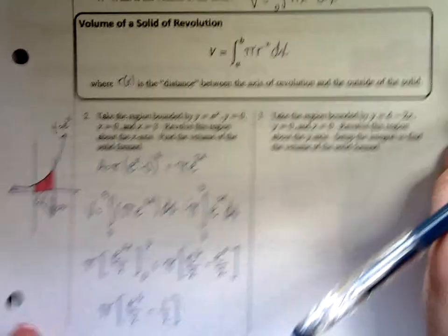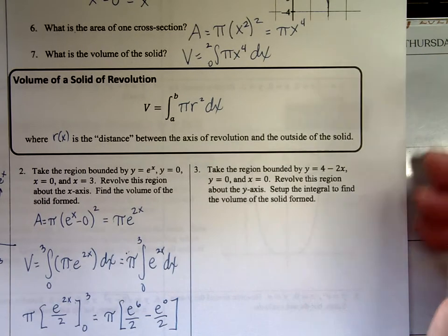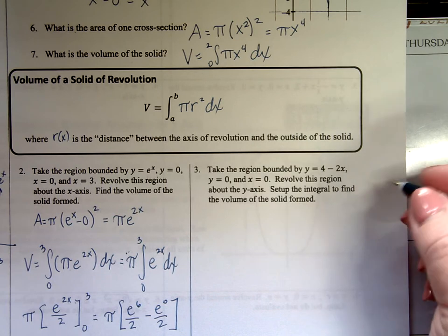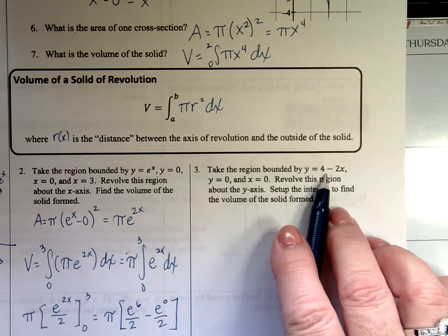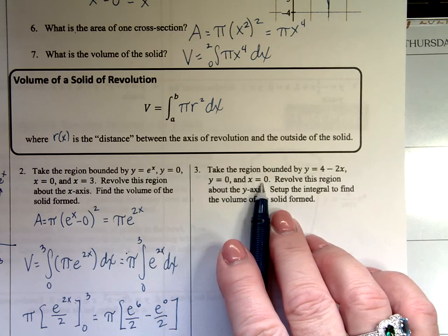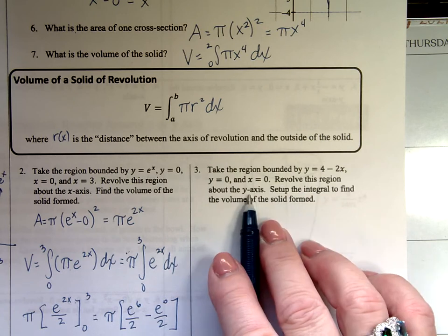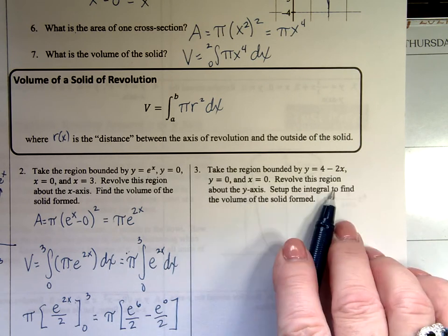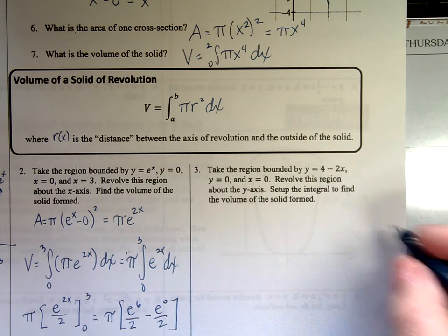All right, next one. This is the last note question. And then we've got a couple practice problems, and we'll be finished. Take the region bounded by 4 minus 2x, y equals 0, x equals 0. Revolve the region around the y-axis, setting up the integral and finding the volume. So I need the picture. I'm all about this picture.